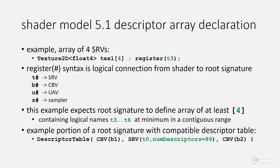In this example, declaring four descriptors in an array, T3 is the name for the first descriptor in the range. So with an array of four, the names T3 through T6 are consumed by this array. The responsibility of the root signature is to declare some range that contains at least the names T3 through T6.